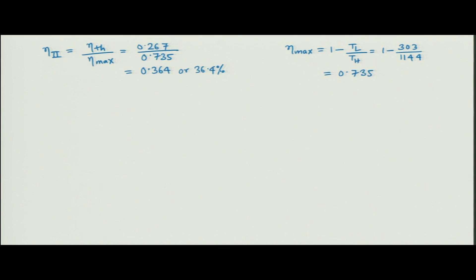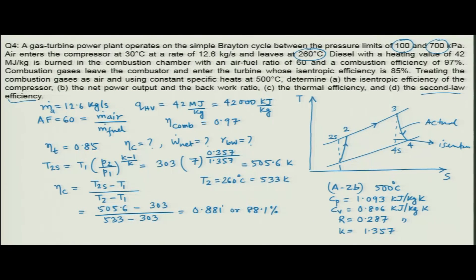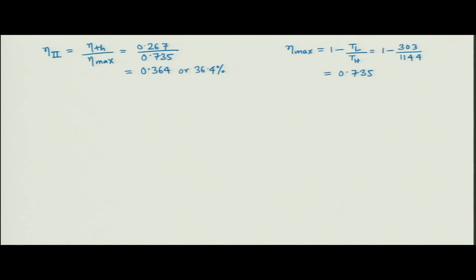That brings us to the end of this problem. In this problem we looked into an actual Brayton cycle operating between 100 and 700 kPa. Based on the calorific value of the fuel we estimated the heat supplied, and from that obtained the net power output, back work ratio, thermal efficiency, and second law efficiency. This brings us to the end of this tutorial; we will continue further in the next class. Thank you.